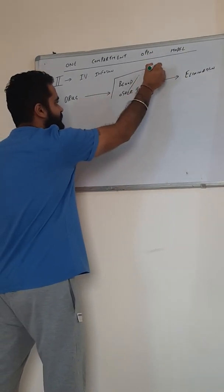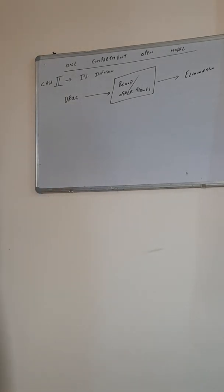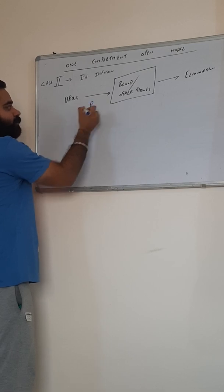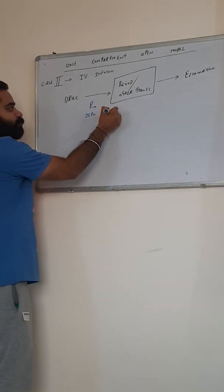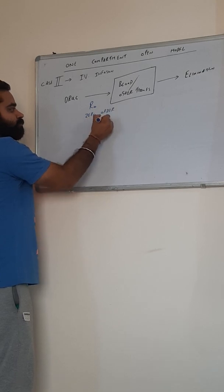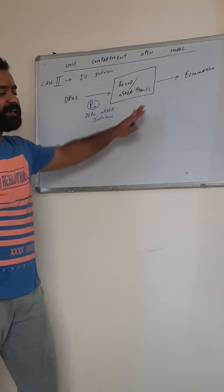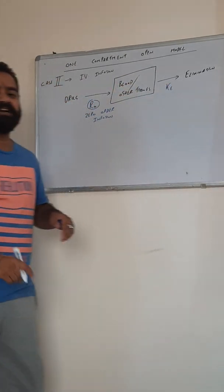Considering the blood and other tissue is a compartment, there are two parameters, two processes which are happening over here. The first one is zero order infusion governed by R. The second is elimination which is governed by constant KE.